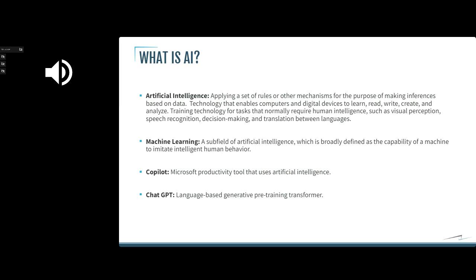Another term you'll hear related to artificial intelligence is machine learning — a subfield of AI, broadly defined as the capability of a machine to imitate intelligent human behavior. You're using methods to train that machine to perform tasks normally done by humans. You'll also hear about large language models and other things we'll go into in later webinars. Machine learning is a very common subfield of AI.